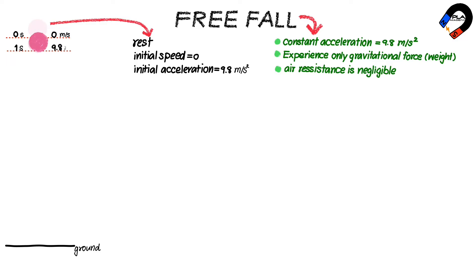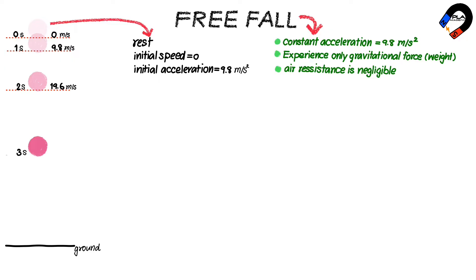After one second, the ball has descended and its speed increases from zero to 9.8 meters per second. After two seconds, the ball has descended a greater distance, and its speed at two seconds is 9.8 times 2, equal to 19.6 meters per second. After three seconds, its speed is 9.8 times 3, equal to 29.4 meters per second.